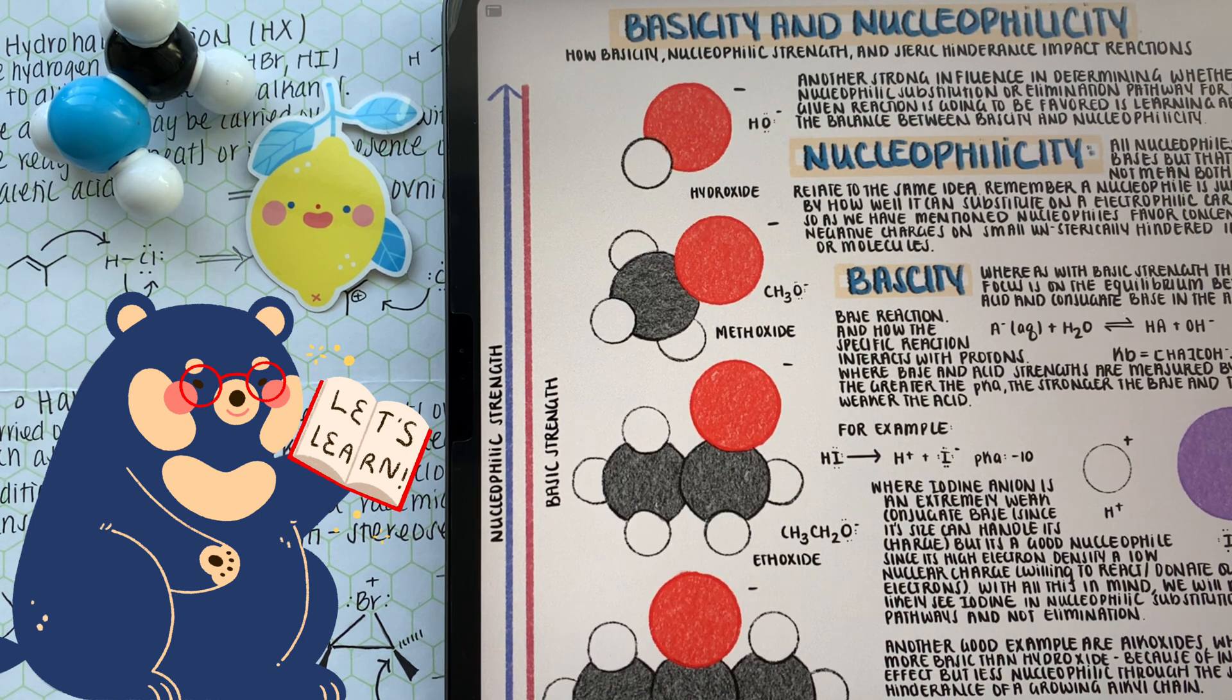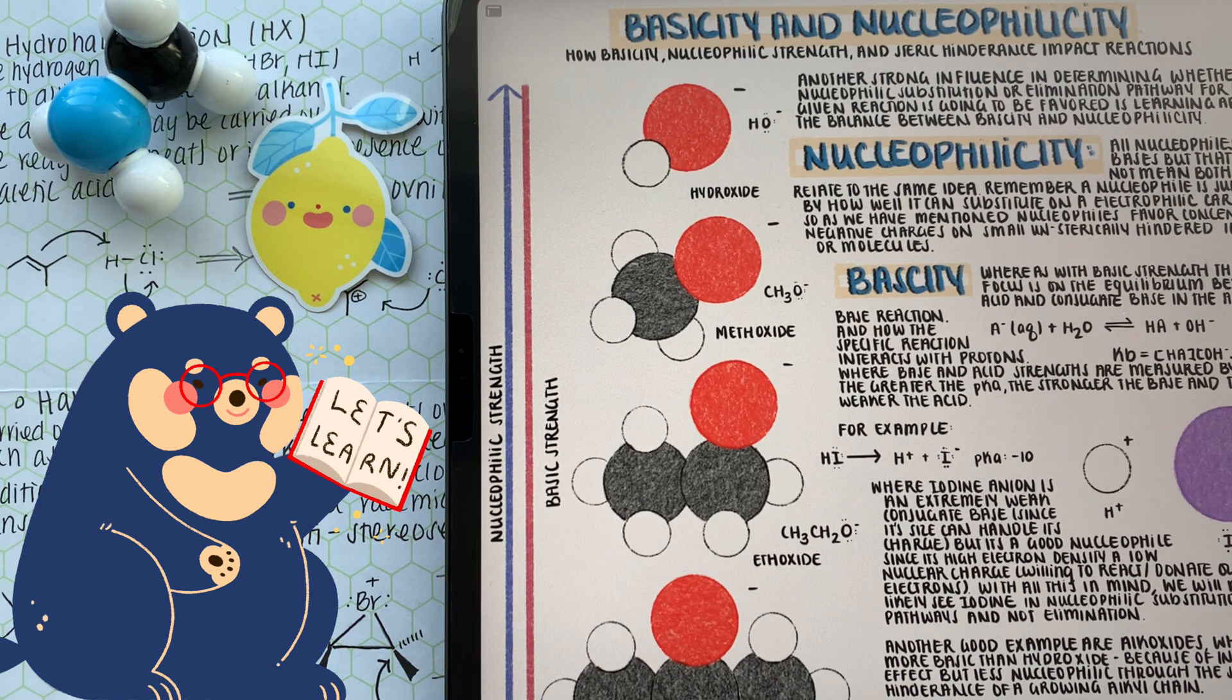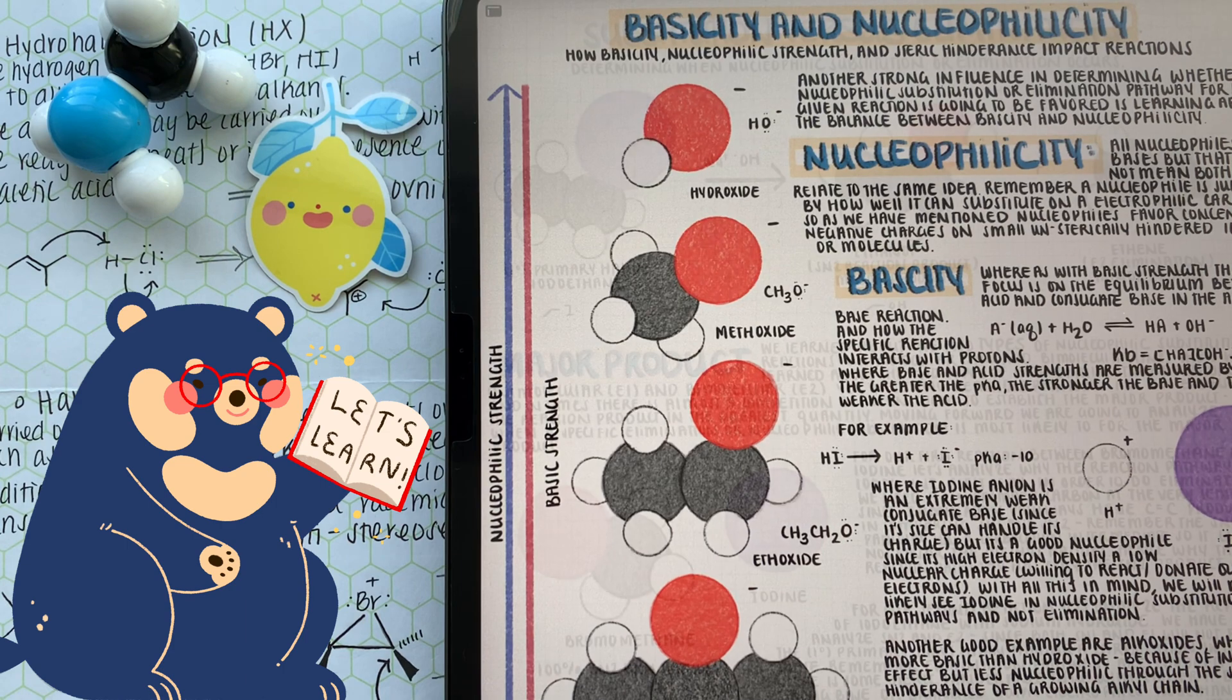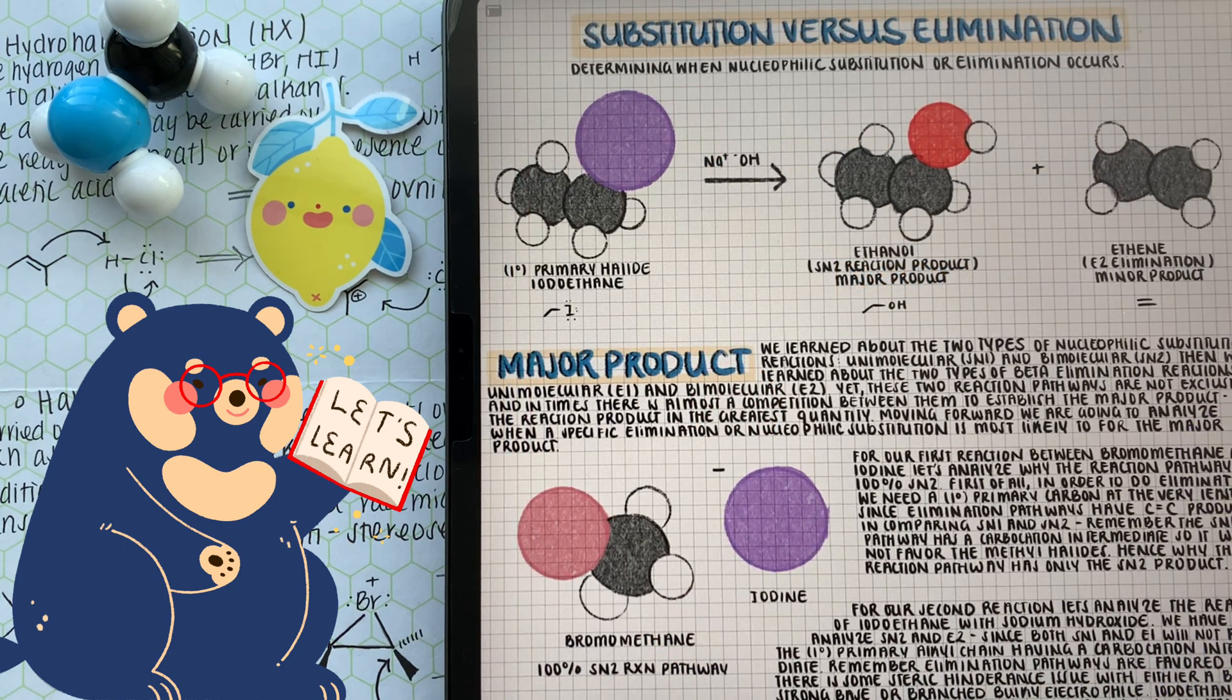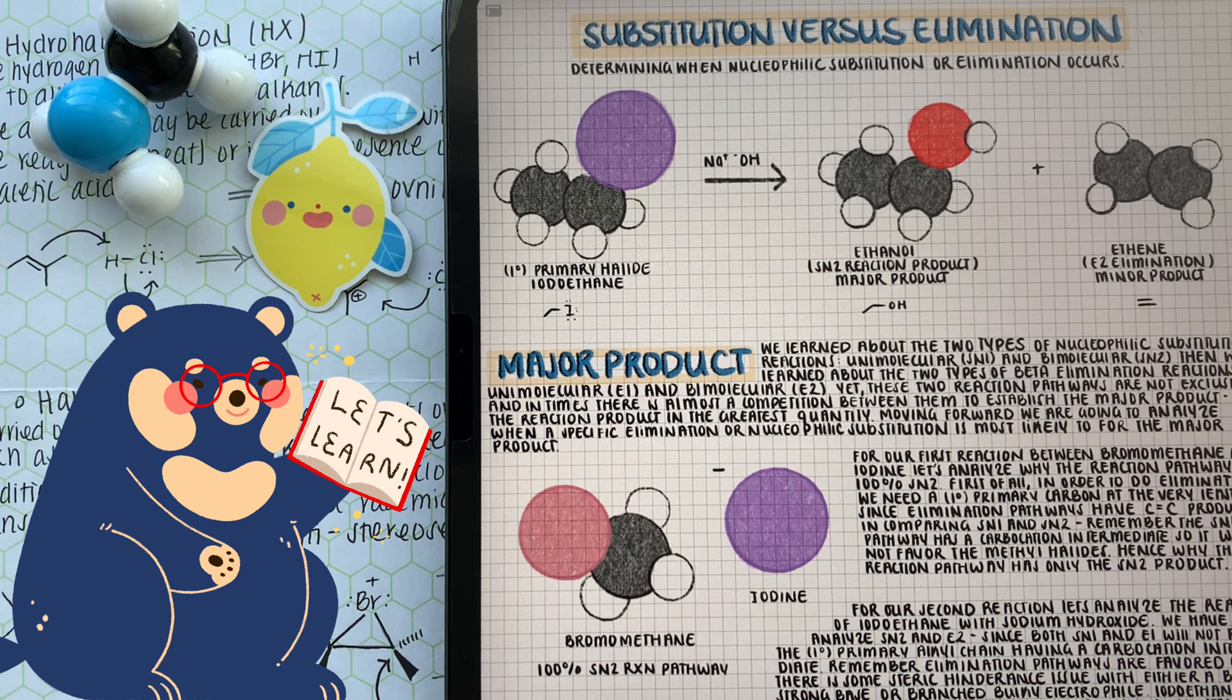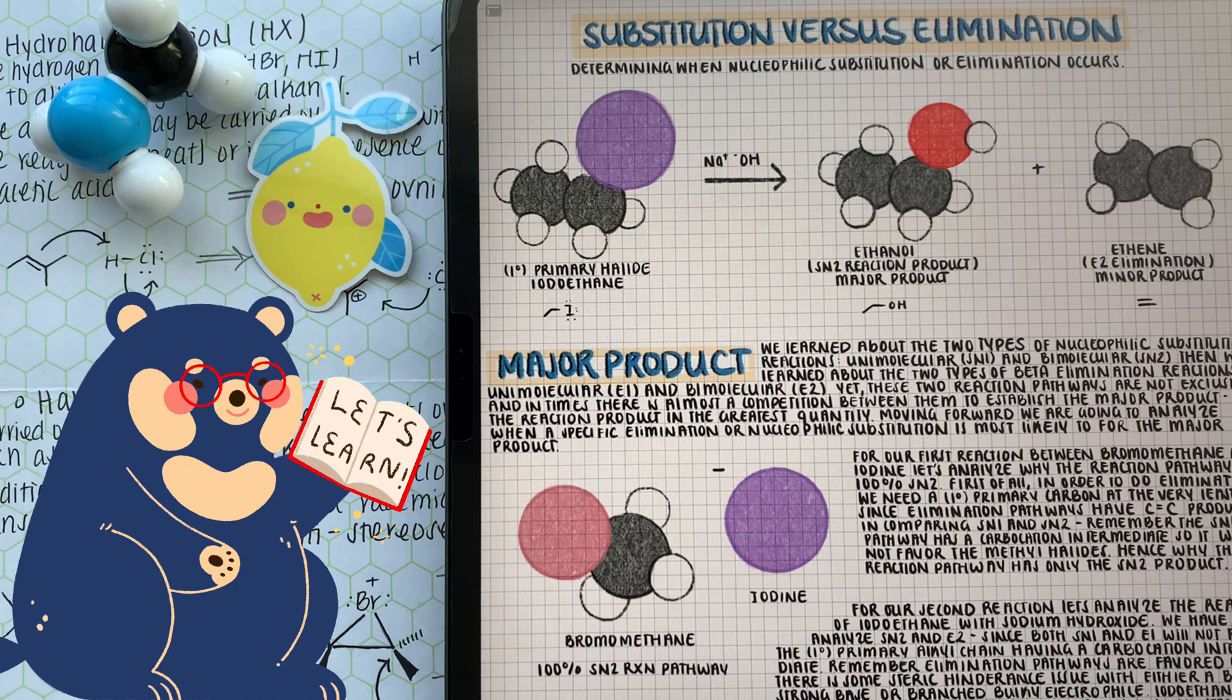But if we had a bulky oxide, such as 2-propoxide, we might lean more towards elimination than substitution. Now we're going to start looking at different reactions and determining whether or not we're going to favor nucleophilic substitution or beta elimination for the favored product. There are some reaction conditions that are a dead giveaway.